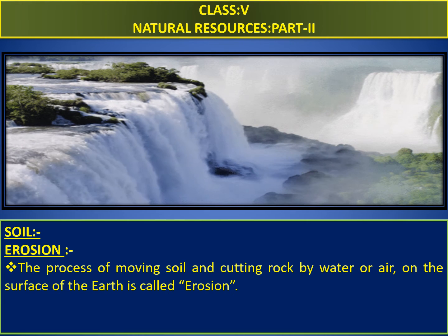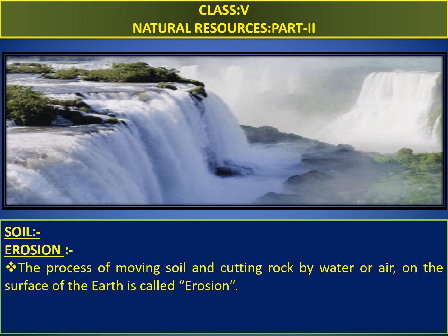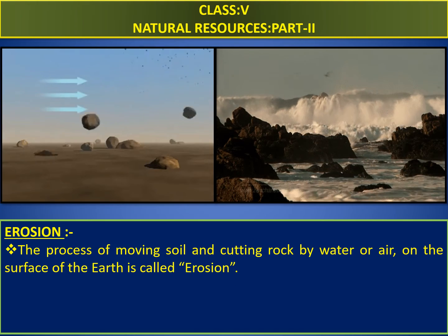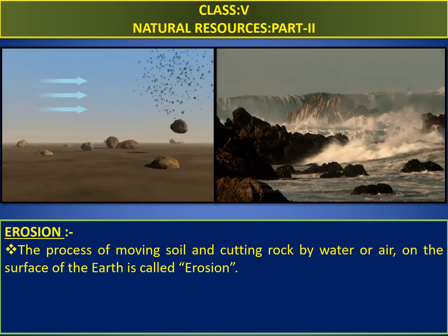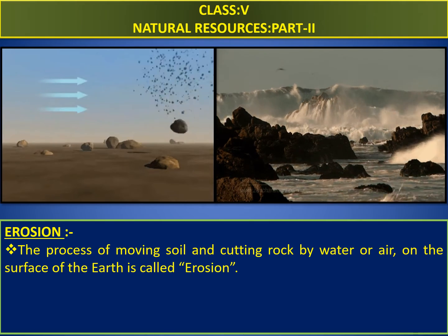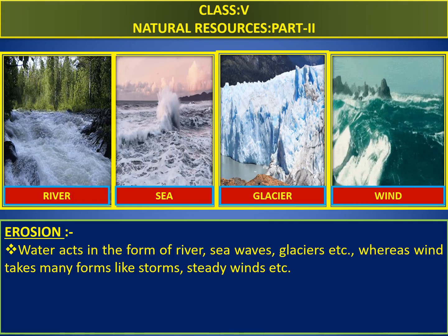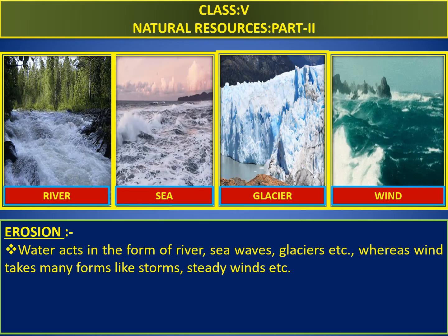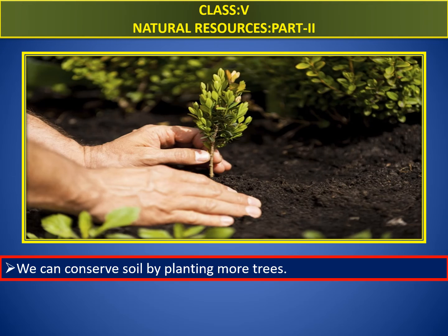Soil is very important in our life. The process of moving soil and cutting rock by water or air on the surface of the earth is called erosion. Water which flows with great speed and wind with great force cause breaking of rocks and transportation of soil. Water acts in the form of rivers, sea waves, glaciers, etc., whereas wind takes many forms like storms, steady winds, etc. We can conserve soil by planting more trees.